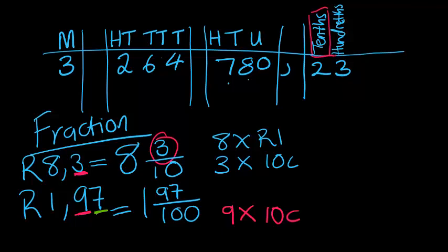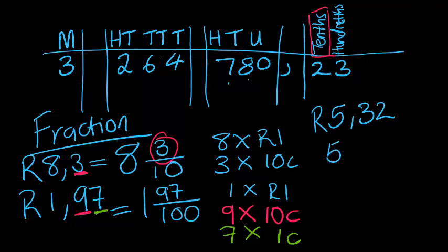The 7 is a hundredth. And if I divide 1 rand into 100 equal pieces, I get 100 cents. I'm going to say this is 7 times 1 cent. And our 1 rand is 1 times 1 rand. In coins, for me to have 1 rand and 97 cents, I have 1 rand coin, I have 9 ten cents coins, and I have 7 one cent coins. Let's do one last one. Let's assume we've got 5 rand and 32 cents. This means that I've got 5 one rand coins, I've got 3 ten cents coins, and I've got 2 one cent coins.